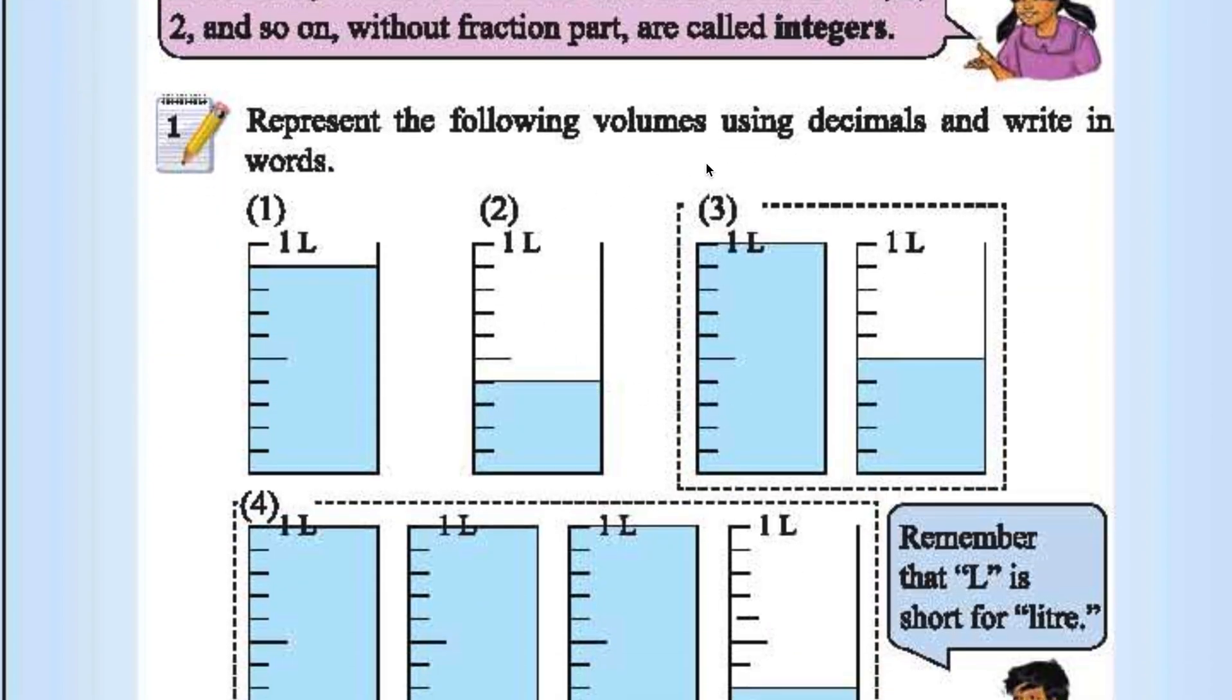Represent the following volumes using decimals and write it in words. This is up to 9th division. So it is 0.9 liters. I am not writing the unit of water. 0.9 liters. You can put L also, no problem.